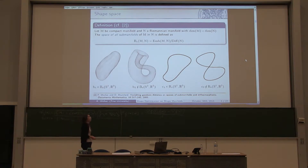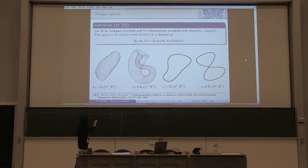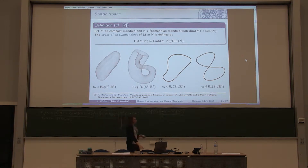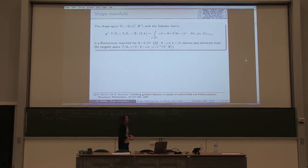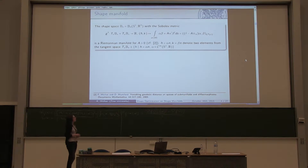This definition can be extended to higher dimensions — here you can see two shapes; this one would lie in the shape space BE for S2 and R, and this one does not. Now we work with this shape space. Michor and Mumford also showed that this shape space, together with the Sobolev metric defined by the mapping G1, is a Riemannian manifold if the metric parameter H is larger than 0.